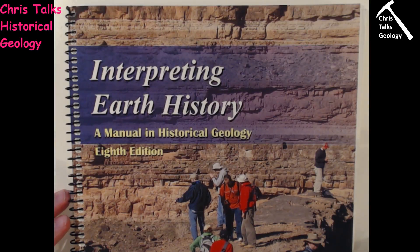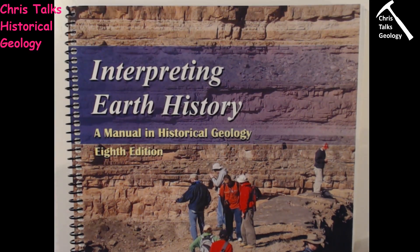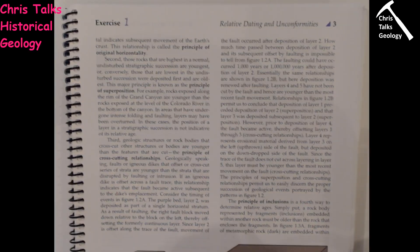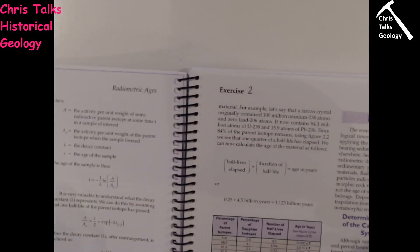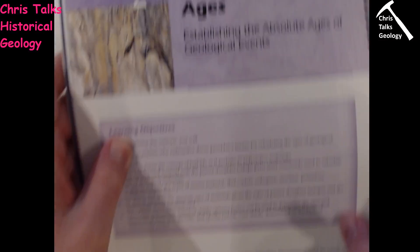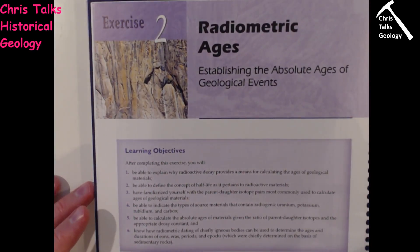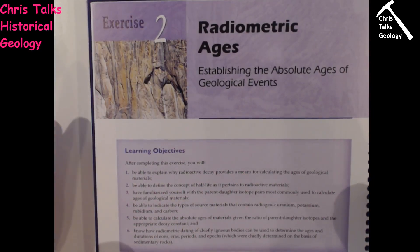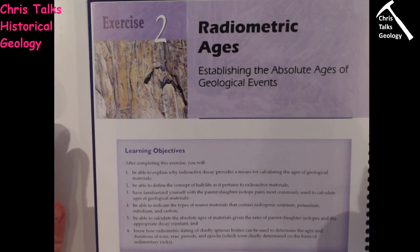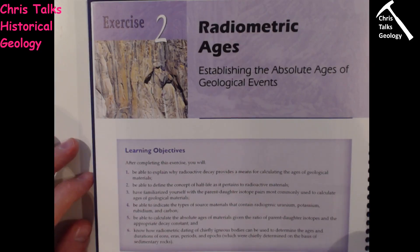Hello everybody, this is Dr. Christopher White and today we are going to be doing exercise number two from Interpreting Earth History by Ritter and Peterson. Exercise number two begins on page 16, titled Radiogenic Ages. What we're going to try and do with this exercise is use uranium and lead data from zircon crystals to actually date a sequence of rocks. We're also going to use fossil evidence to help date a sequence of rocks as well. This particular lab is nice and short and relatively straightforward.